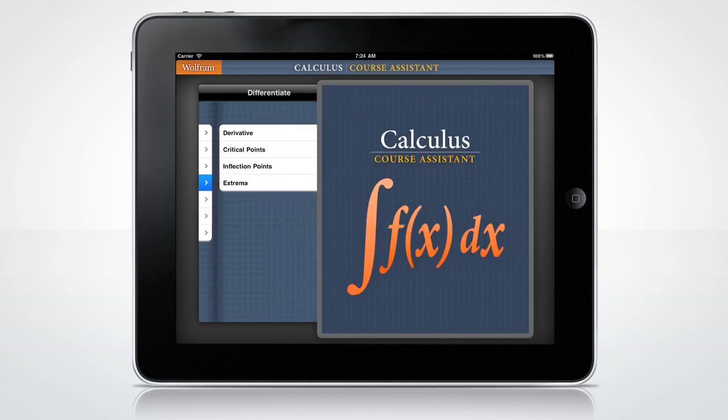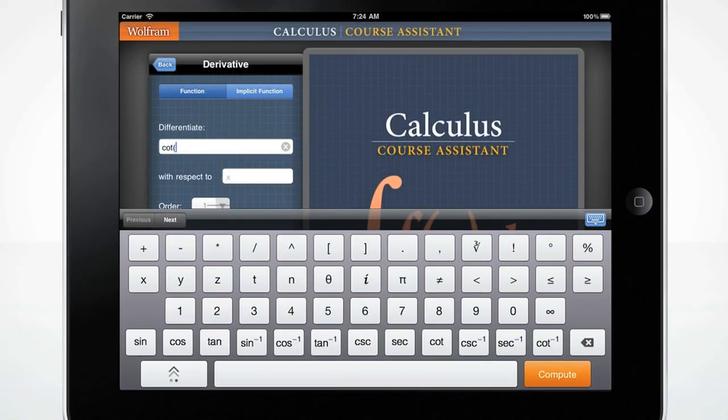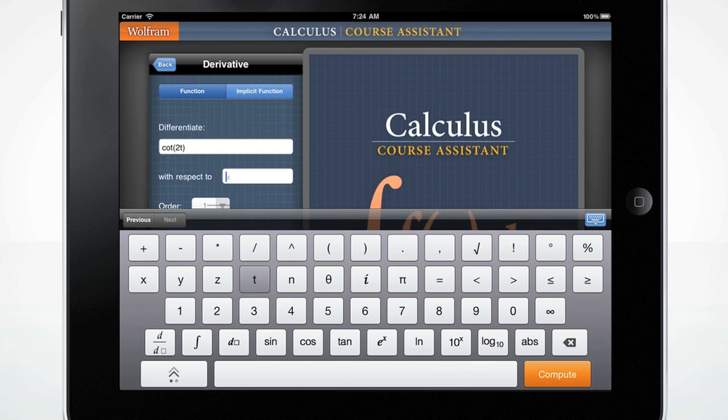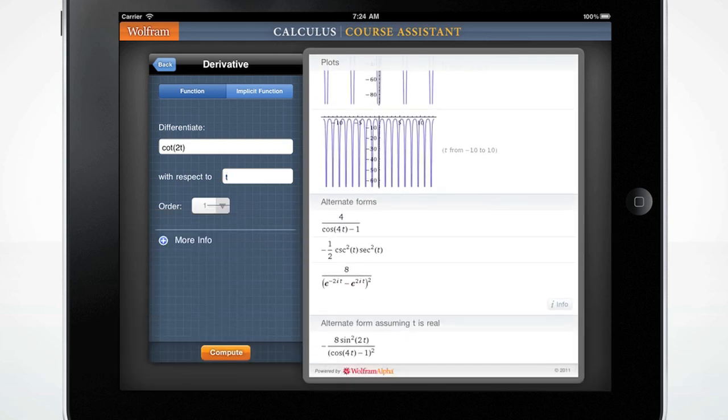Need to differentiate an equation? Wolfram Calculus can easily do this. Let's differentiate cotangent of 2t with respect to t and press Compute. You can now see at the bottom of the screen that there is a More Info button that shows you important information.